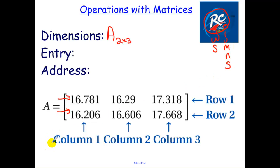The entry is any of these data points in our matrices. So if we're talking about 17.318, the address for that is a little a, and then you first give the row, row one, column three.